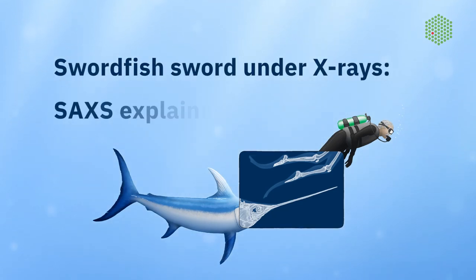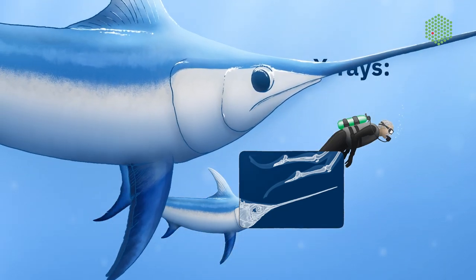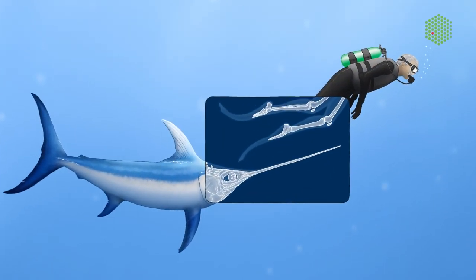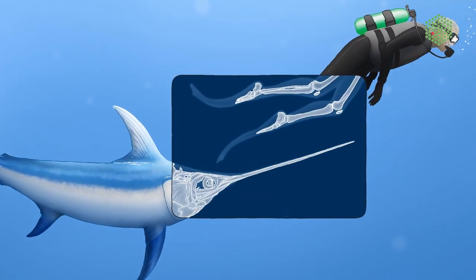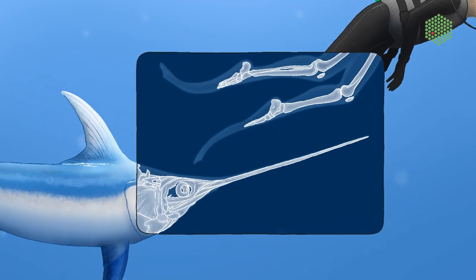Swordfish sword under X-rays. SAXS explained. The swordfish's sword is in many ways similar to the bones of older human adults. However, it doesn't break so easily.